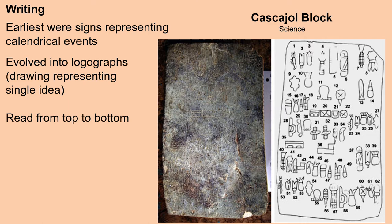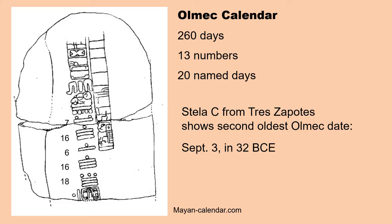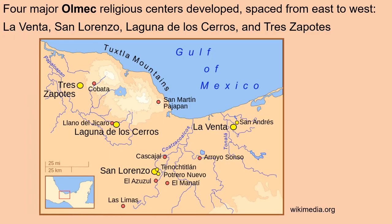The earliest writing were signs representing calendrical events, but these evolved into logographs — drawings representing a single idea — and you read these from top to bottom. When you look across these different Mesoamerican civilizations, the glyphs resemble each other. Look in particular at the moon and also the snake. The Olmec calendar contained 260 days, of which 20 were named days. Stela C from Tres Zapotes shows the second oldest recorded Olmec date in writing: September 3rd in 32 before the Common Era, with numbers 7, 16, 6, 16, and 18 represented.